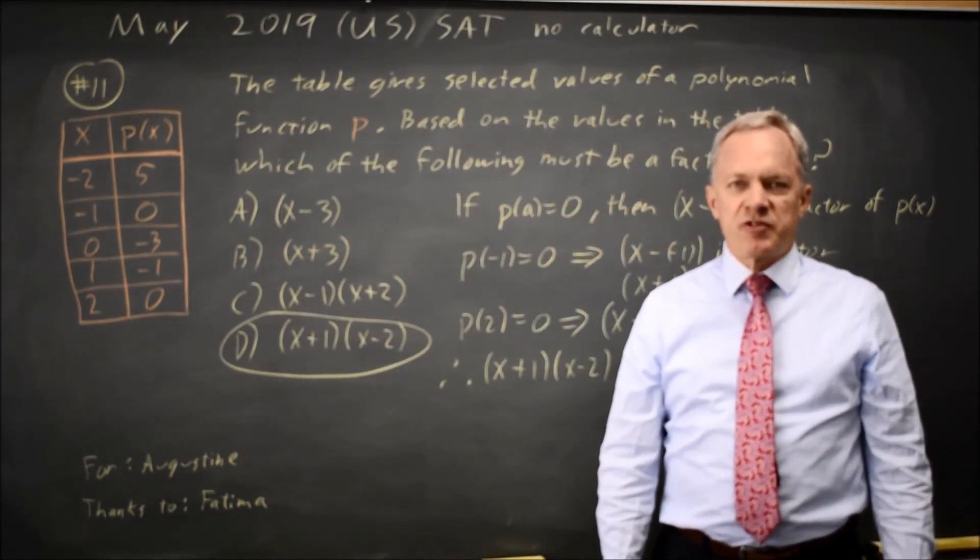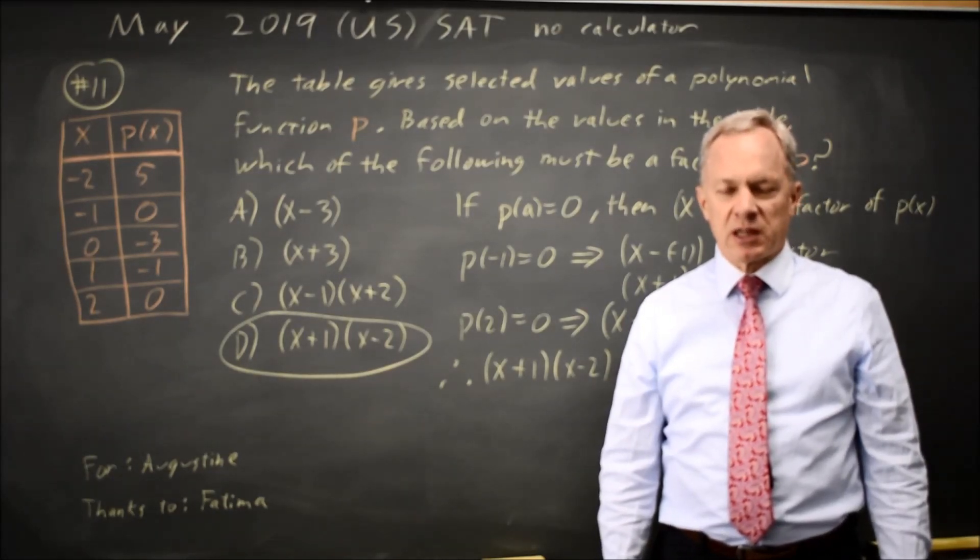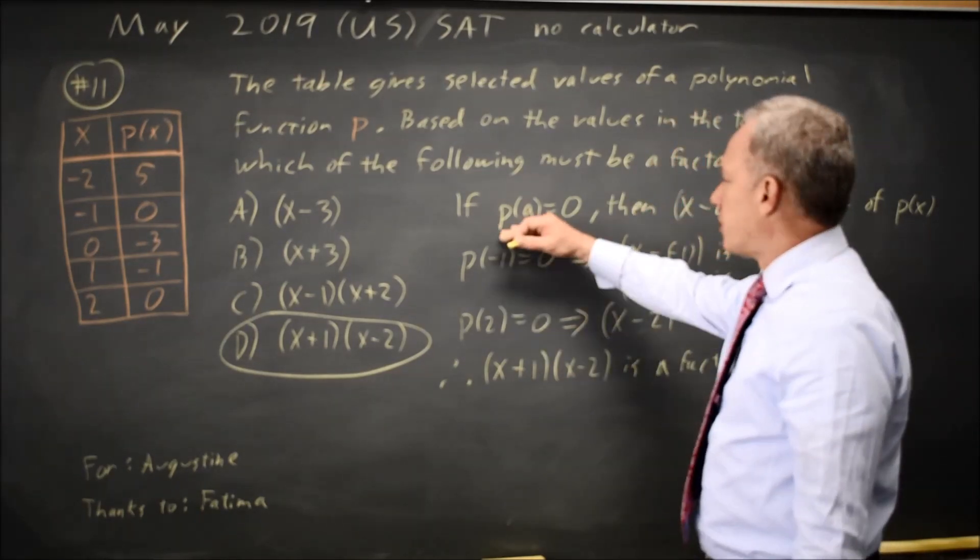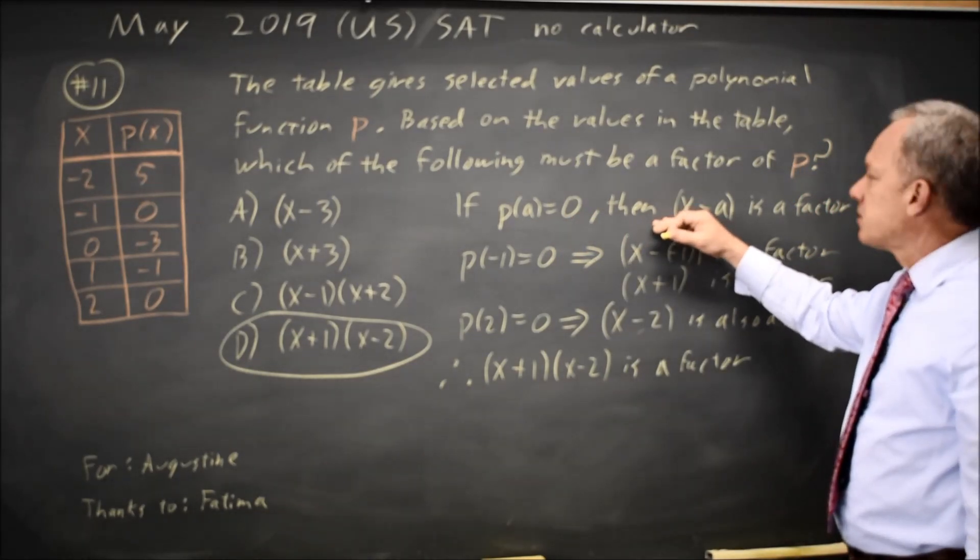The College Board often asks you questions about the zeros of a polynomial, which are also called the roots, or the factors and the relationships among them. And this fundamental rule that if the value of the polynomial is 0 at A, then X minus A is a factor.